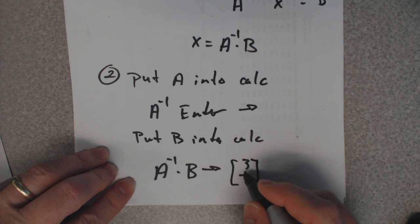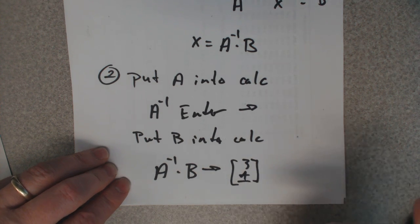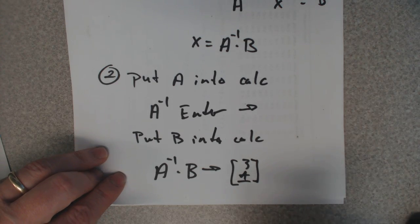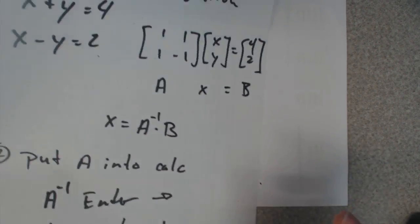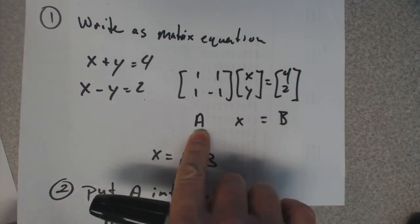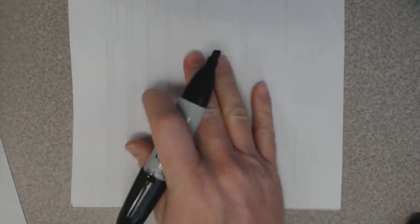3, 1. Okay, if, that's a big if, A has to have an inverse. So what if it doesn't have an inverse? Let's take an example.